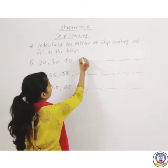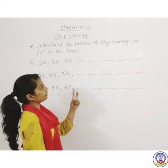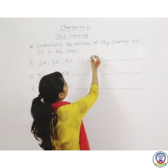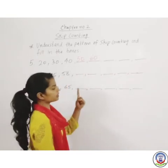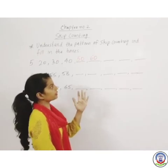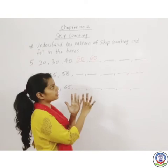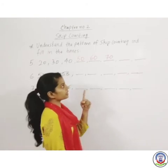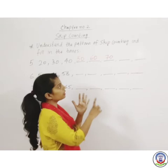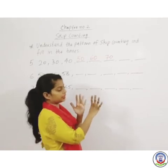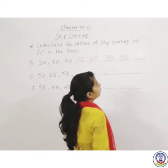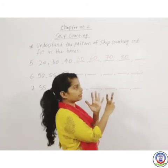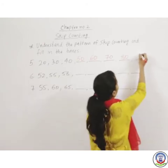We write 50, then skip 10 to get 60, then skip 10 to get 70, then skip 10 to get 80, then skip 10 to get 90.